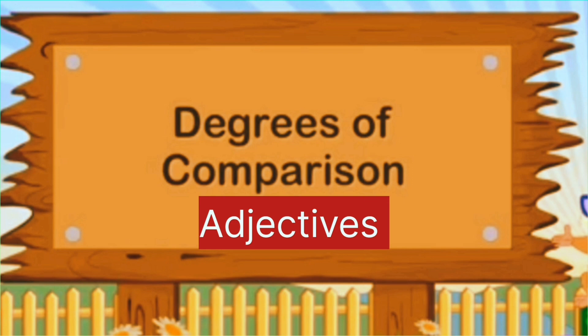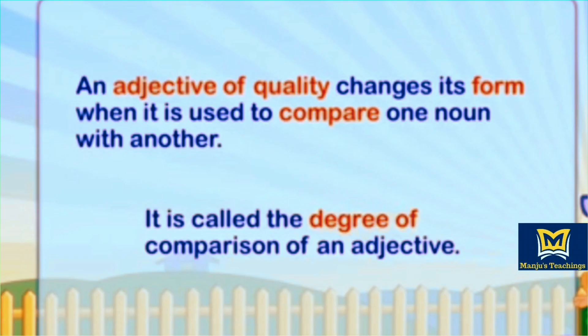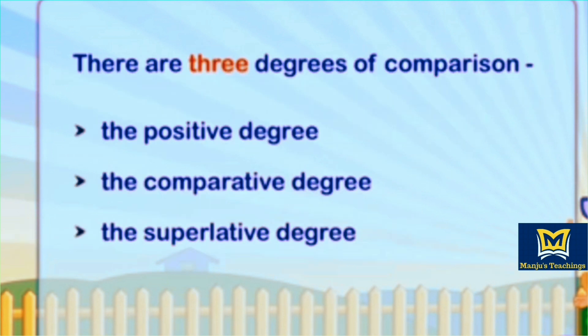They are adjectives. An adjective of quality changes its form when it is used to compare one noun with another. It is called the degree of comparison of an adjective. There are three degrees: the positive degree, the comparative degree, and the superlative degree.